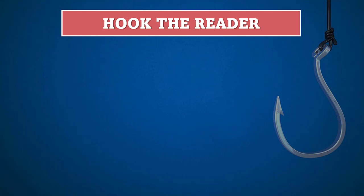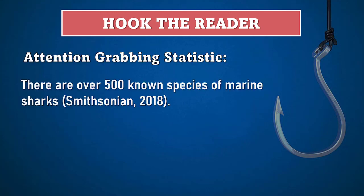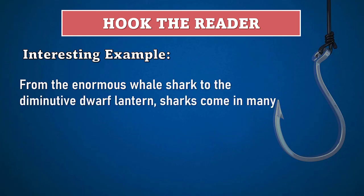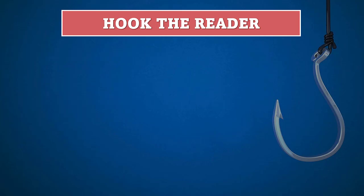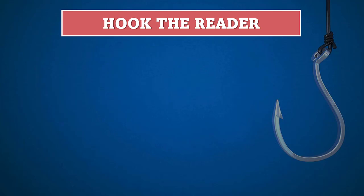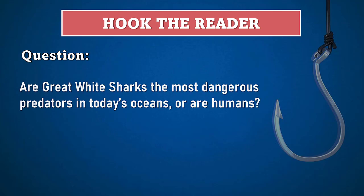First, to hook the reader, try an attention-grabbing statistic: 'There are over 500 known species of marine sharks.' An interesting example also works: 'From the enormous whale shark to the diminutive dwarf lantern, sharks come in many shapes and sizes.' A brief anecdote works too: 'A lone surfer wades into cloudy water. The posted warning — shark sighted — foretells disaster.' A thought-provoking question can also draw in readers: 'Are great white sharks the most dangerous predators in today's oceans, or are humans?'